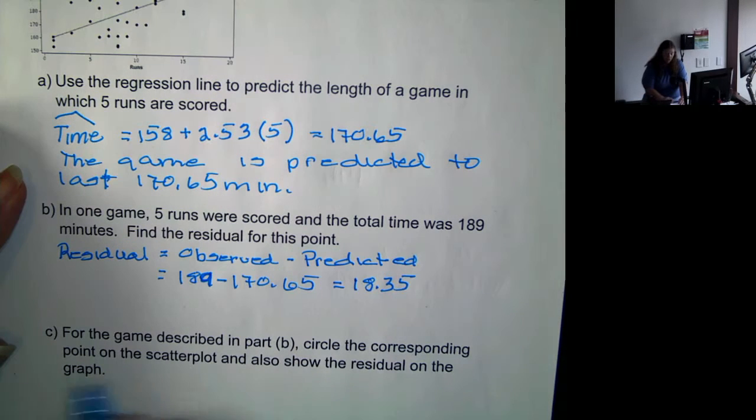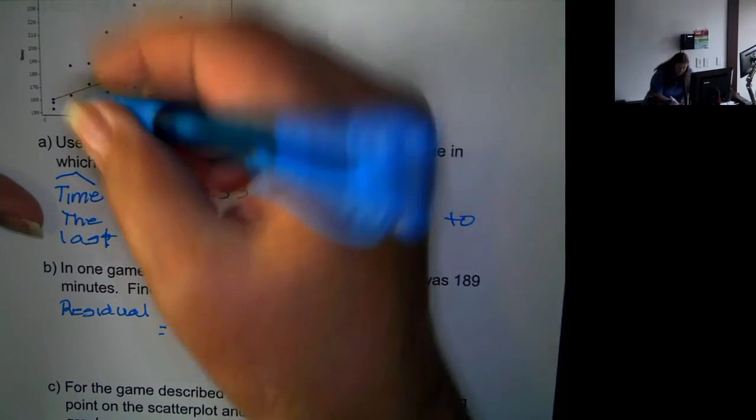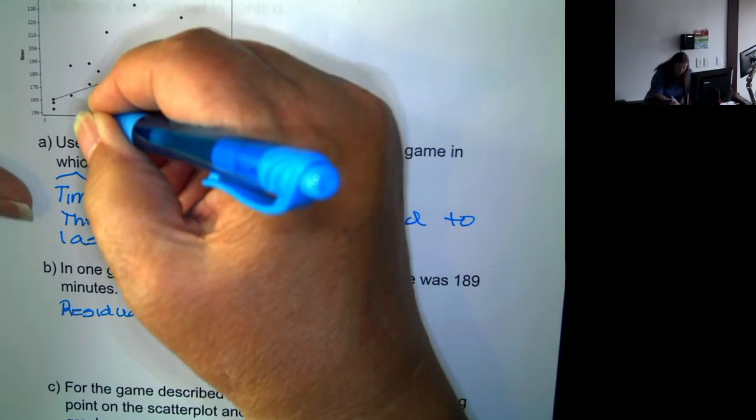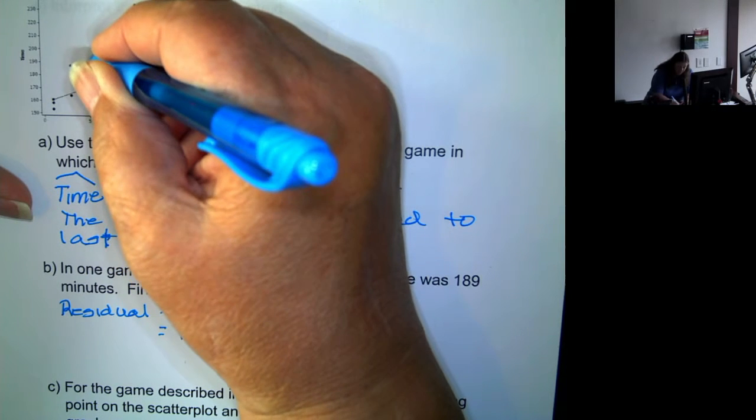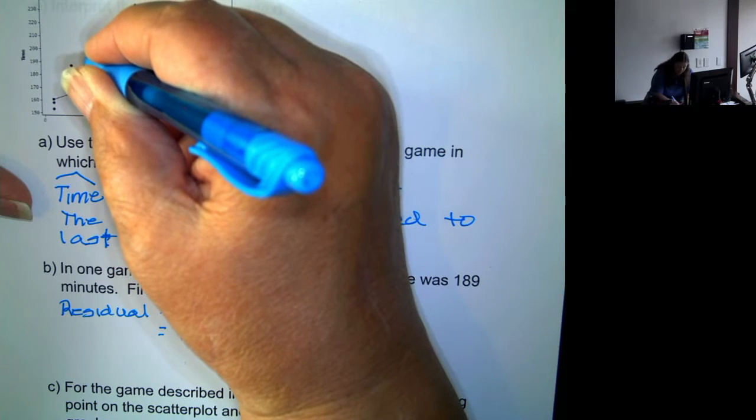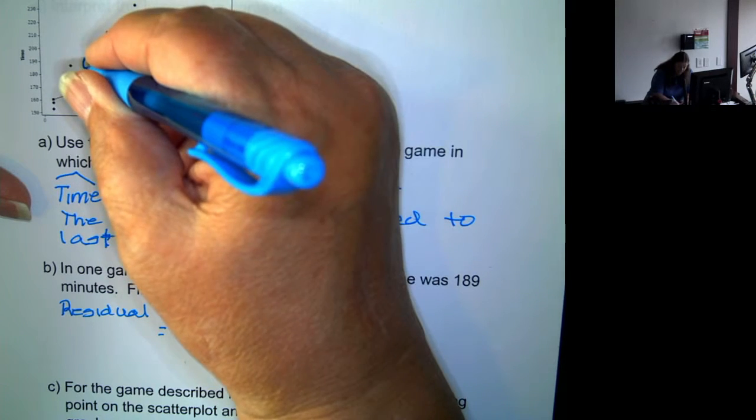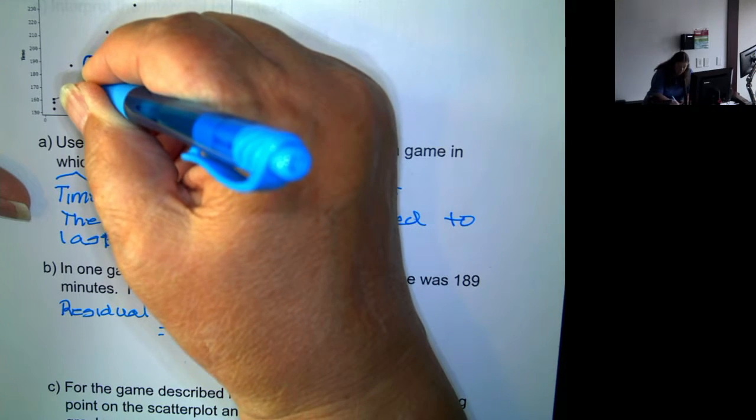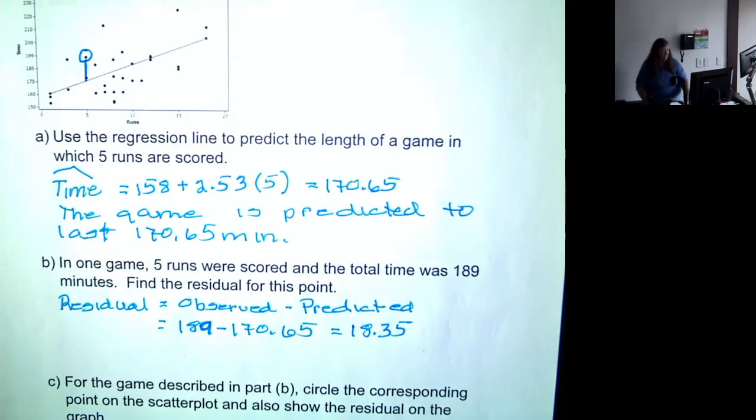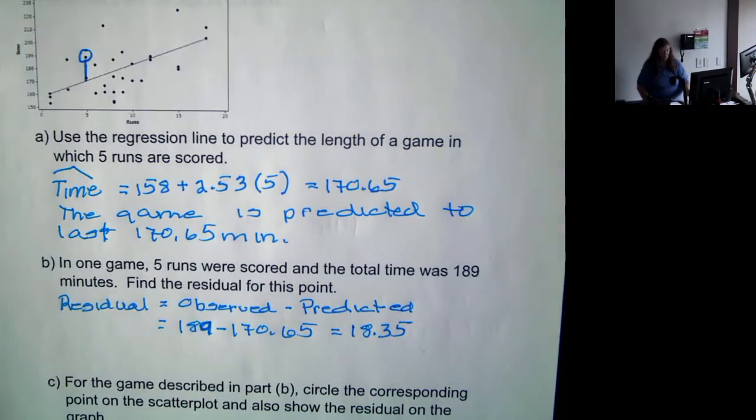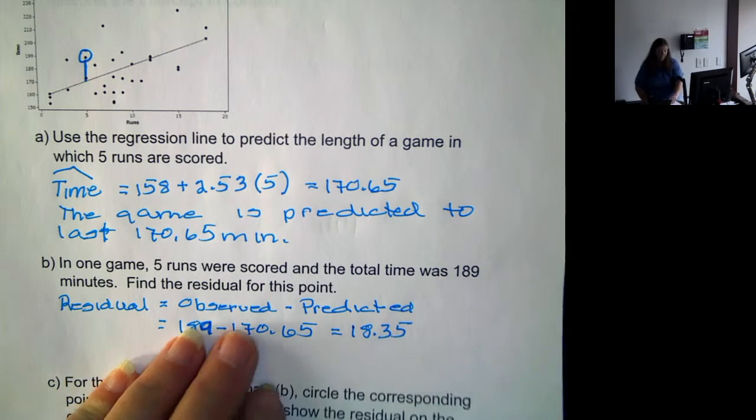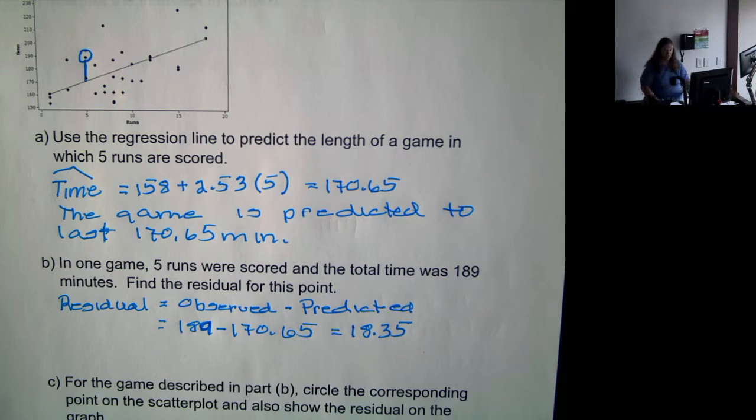Now we want to circle the corresponding point on the scatter plot and show the residual on the graph. Well, five minutes is about here. This would be about 189. So this vertical distance is our residual or is our difference. So residual is the vertical distance from the actual point on the scatter plot to the regression line.